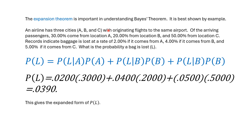I'm going to give you an example. An airport has three cities — A, B, and C — with outgoing flights to the same airport. Of the arriving passengers, 30% come from location A, 20% from location B, and 50% from location C. Records indicate baggage is lost at a rate of 2% if it comes from A, 4% if it comes from B, and 5% if it comes from C.